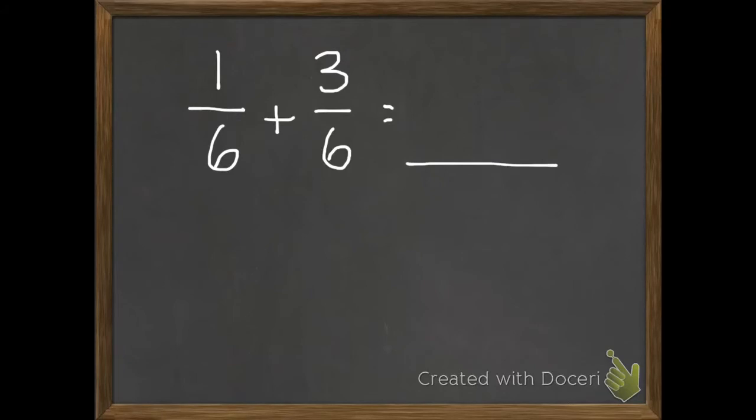Let's start by adding 1 sixth plus 3 sixths. We only add our numerators, so we have 1 plus 3. That's going to give us 4 sixths. The denominator always stays the same, because we're working with 6. So we have 1 of those 6, we get 3 more of those 6, and that gives us 4 sixths.